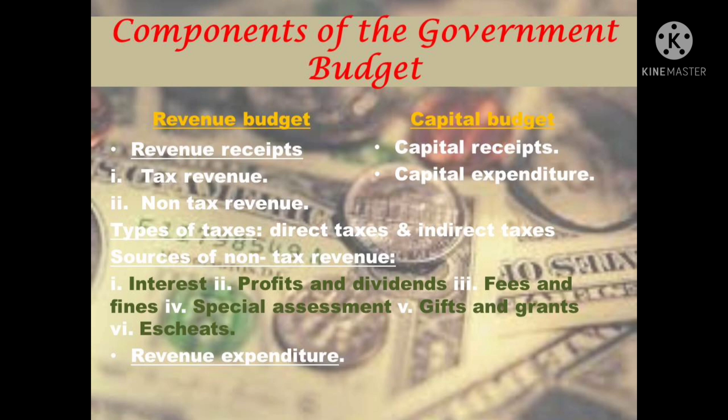Sources of non-tax revenue include: First, interest — the government receives interest on loans given by it to state governments, union territories, private enterprises, and the general public. Second, profits and dividends — the government earns profit through public sector undertakings. Third, fees and fines — fees refer to charges imposed by the government for services provided by it, which are generally in public interest. Similarly, the government also gets income by way of fines.